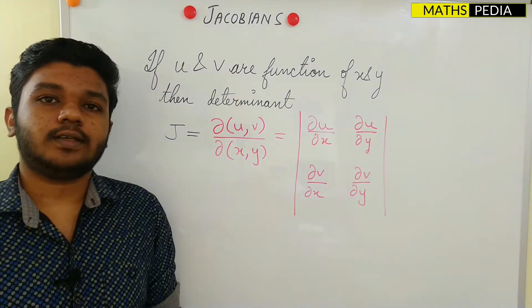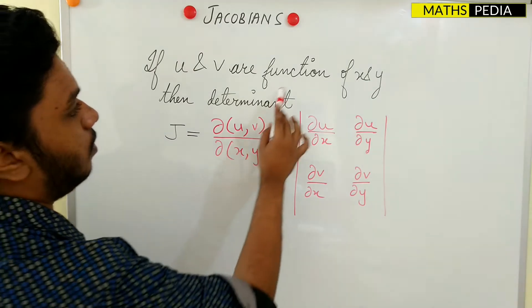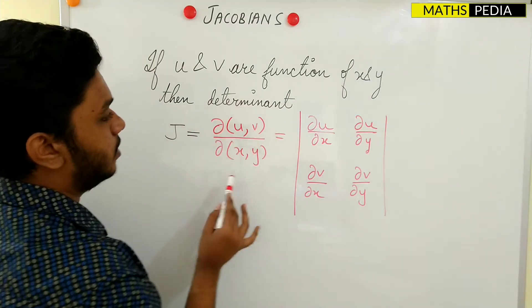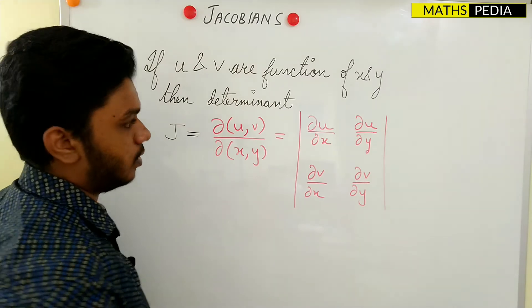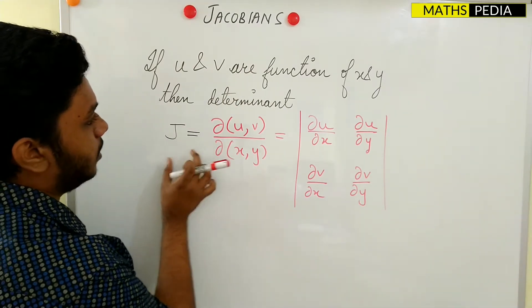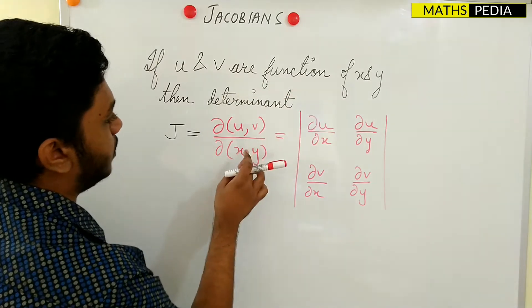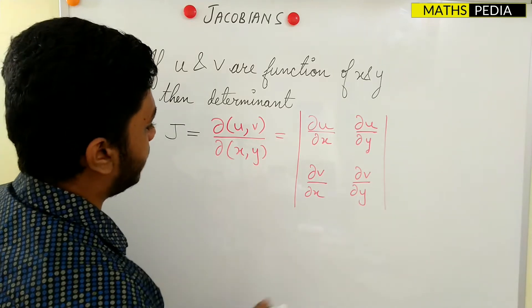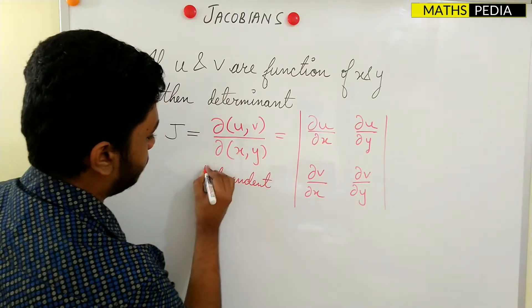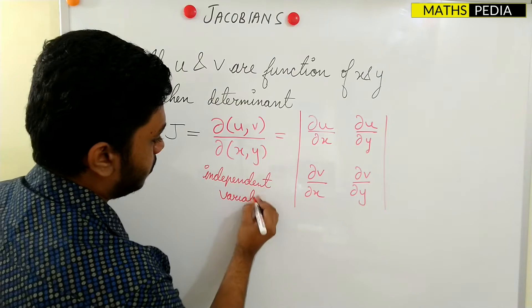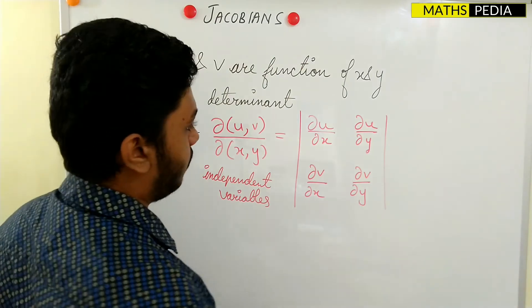In this video we will be discussing the Jacobian definition. If u and v are functions of x and y, then a certain determinant is called the Jacobian. It is denoted by J — nothing but ∂(u,v)/∂(x,y) — where x and y are the independent variables and their determinant gives the Jacobian of u and v with respect to x and y.